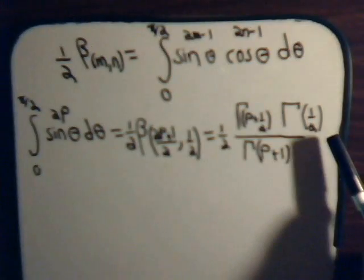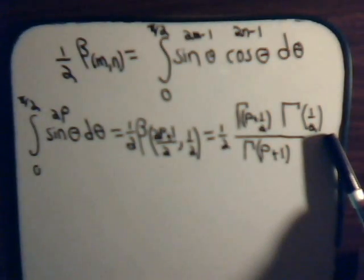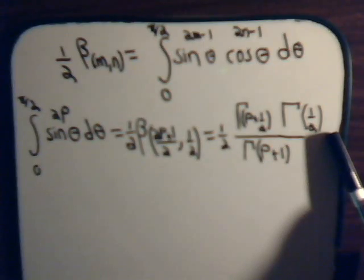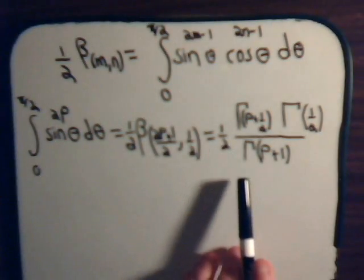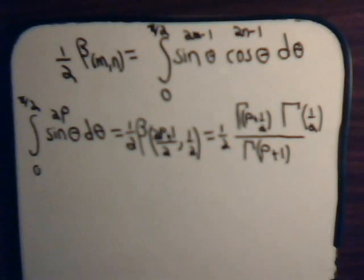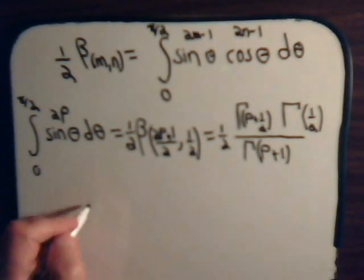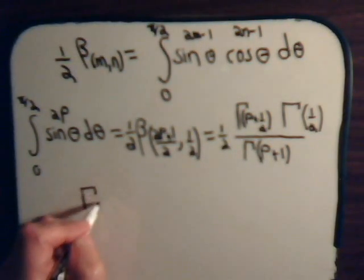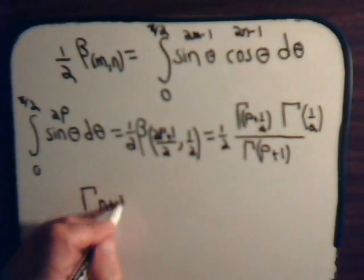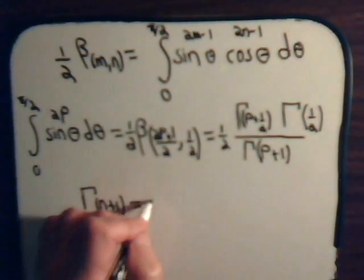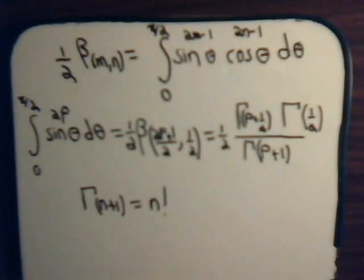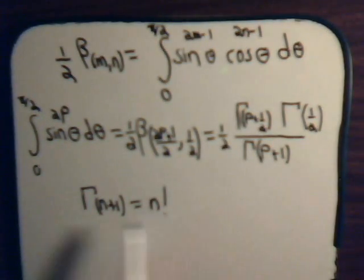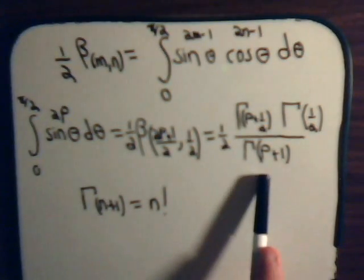So this integral is now expressed in terms of gamma functions. From a previous video, we know the gamma function of one half is the square root of pi. And we know that the gamma function of p plus one equals p factorial — we derived that in our very first video when we started working with the gamma function.